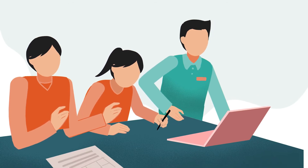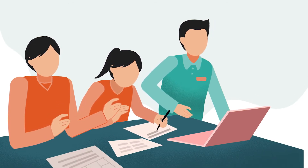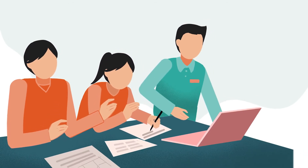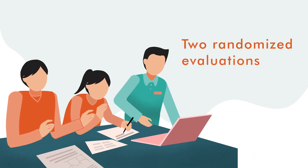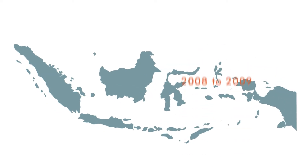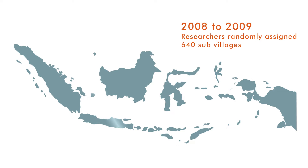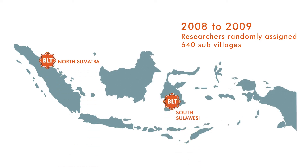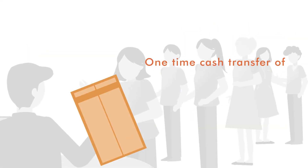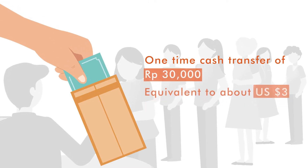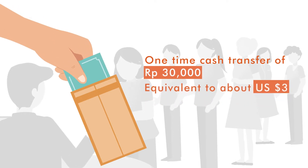With the goal to improve the effectiveness of social assistance targeting, the Government of Indonesia worked together with J-PAL researchers to conduct two evaluations. The first evaluation took place from 2008 to 2009. Researchers randomly assigned 640 sub-villages across North Sumatra, South Sulawesi, and Central Java to receive a one-time cash transfer of 30,000 rupiah, equivalent to about 3 USD, through two different methods.